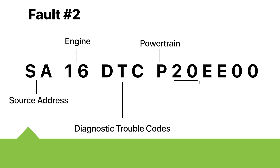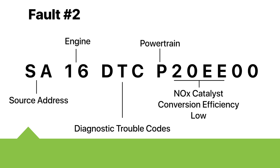20EE stands for NOX catalyst conversion efficiency low. 00 stands for below the threshold. This is the failure mode that sets this fault.